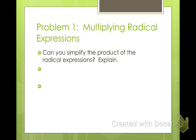Can you simplify the product of the radical expression and explain? Here I have the cubed root of 6 times the square root of 2. Can we take the cubed root of 6? No. Can we take the square root of 2? No. So we have two numbers that we can't simplify anymore that we're multiplying together. This one has index 3, and this one is understood to have index 2. They have different indexes, so we cannot combine them.